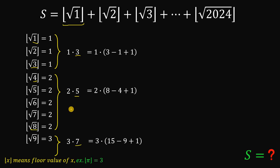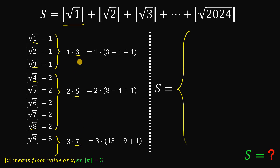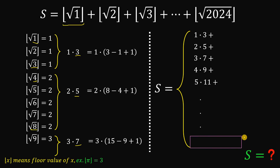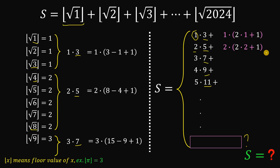From here we see another pattern: 1×3, 2×5, 3×7 — where 3, 5, 7 are all odd numbers. So S is equivalent to the pattern 1×3 + 2×5 + 3×7 + 4×9 + 5×11, and the pattern continues. Since 3, 5, 7, 9 are all odd numbers, we can write odd numbers as 2n+1. So we can write 1×3 as 1×(2·1+1), and 2×5 as 2×(2·2+1), and so on.